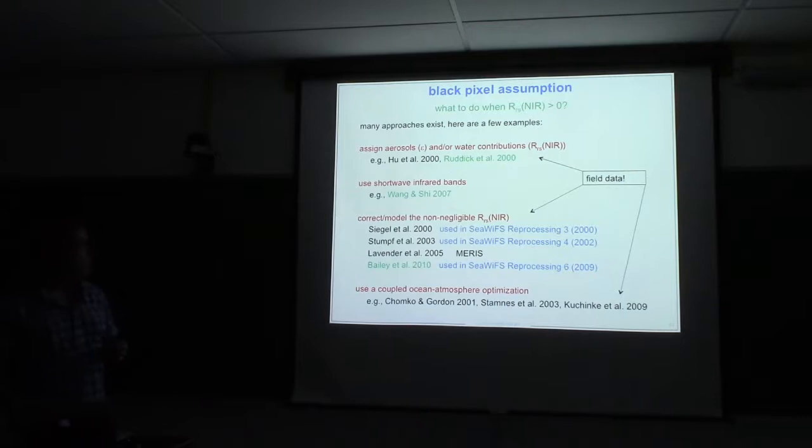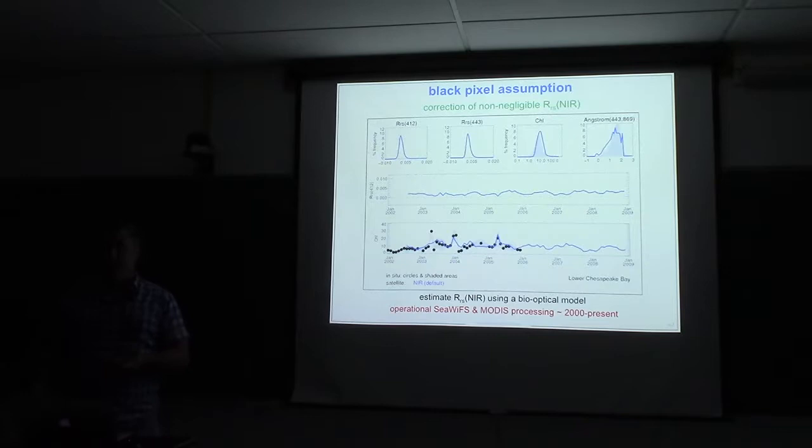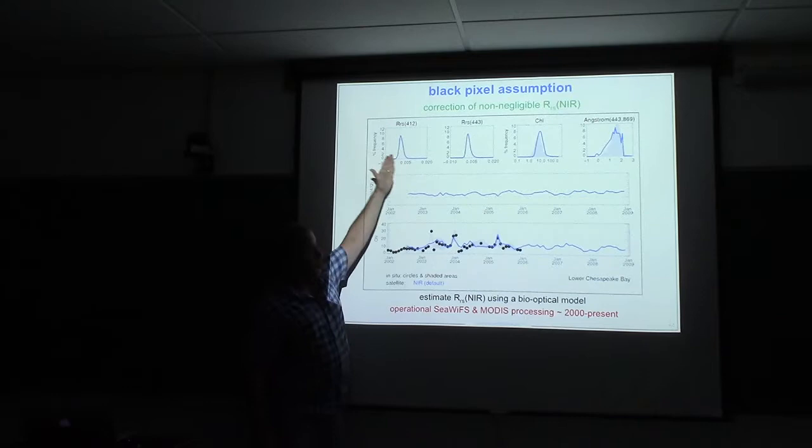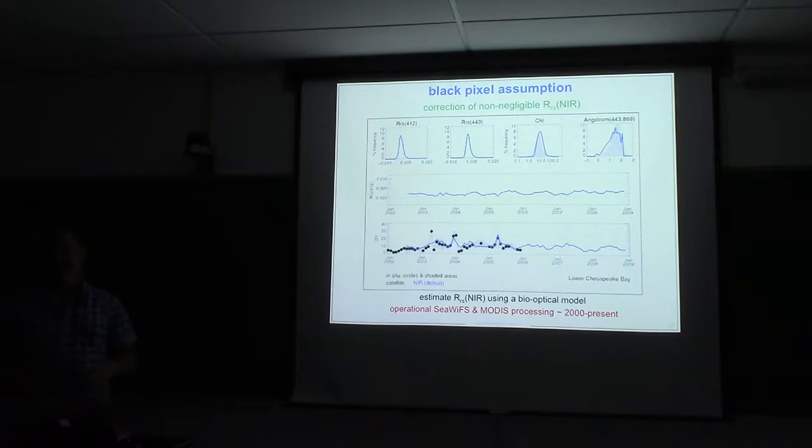There are a number of approaches that try to correct and model non-negligible remote sensing reflectance in the NIR. So rather than providing it, you use a model to estimate what it should be, so you can subtract it out. And then, of course, there are other solutions that just solve for the atmosphere and the ocean at the same time, which can implicitly account for this as well. So we're just going to talk about this bottom one in green here, which is what we're conventionally using at the OBPG. So we're using a biooptical model to take a guess at what the contribution of remote sensing reflectance in the NIR will be. And even with this rudimentary biooptical model, you can see most of the negatives disappear, and the chlorophyll collapses down to what truth ought to be. So this kind of correction works.